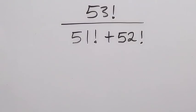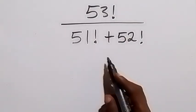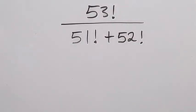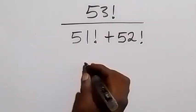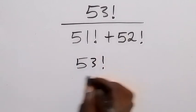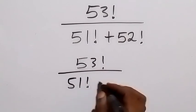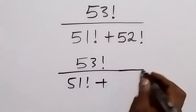Hello, you are welcome. How to solve this problem: we have 53 factorial divided by 51 factorial plus 52 factorial. Now from here we can write this as 53 factorial, then divided by 51 factorial plus 52 factorial.